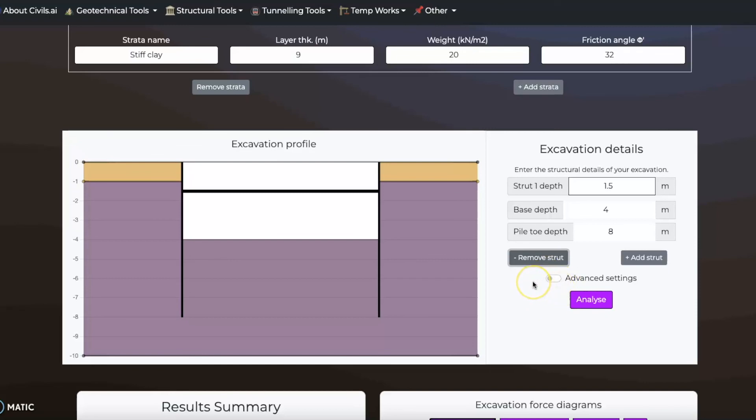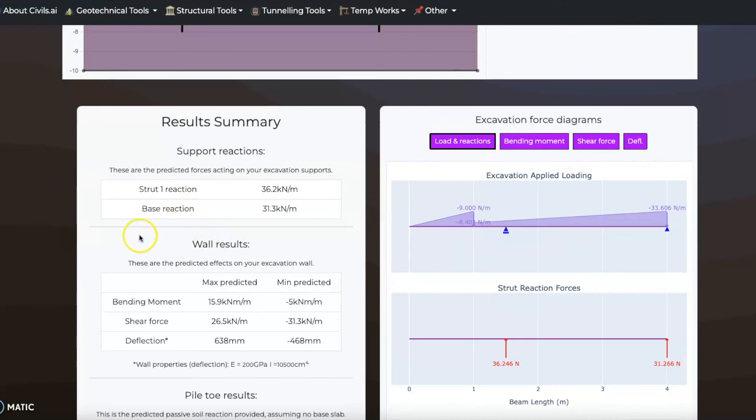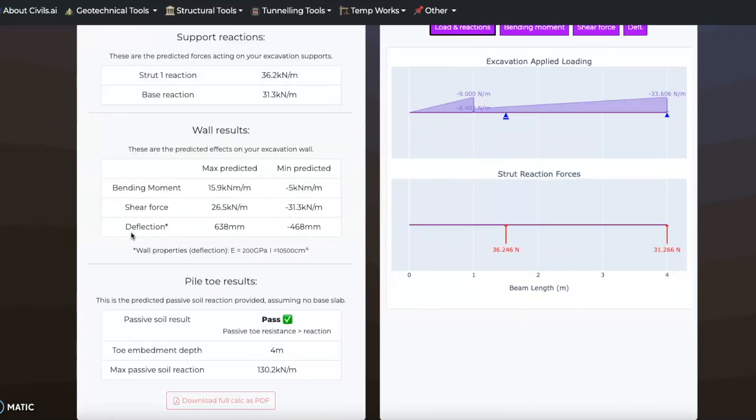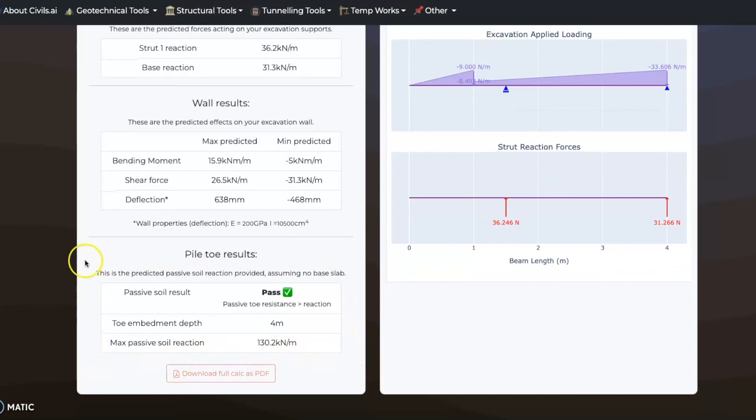After running the analysis, the loads applied to the strut and base slab are calculated. Results for the wall itself are also generated, with estimates for the bending moment, shear force and deflection. Estimated passive soil reaction required is also given, along with an estimate of whether a base slab is required to restrain the force acting on the toe of the wall.